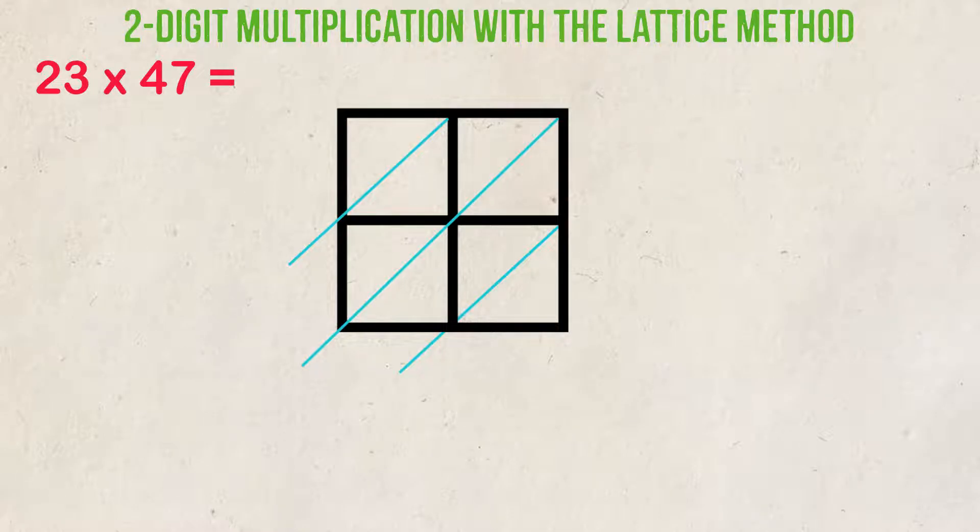The first step in setting up the Lattice Method is to get our boxes and lines set up correctly. We have two digits in both of our numbers, so we will need two rows and two boxes of each. Above the top row of boxes, we put 2 and 3 for our first number. Down the right-hand side, we put 4 and 7 for our second number.